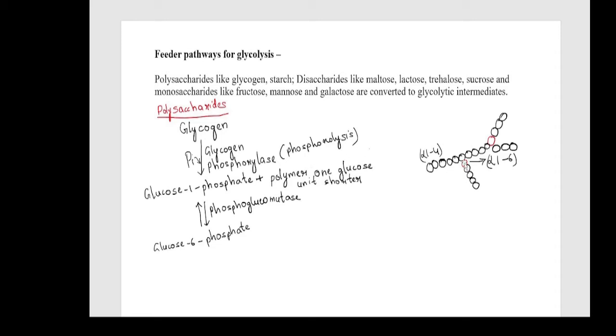At the branch point the debranching enzyme acts on alpha-1,6 glycosidic bonds. The glucose-1-phosphate formed here is converted to glucose-6-phosphate by the enzyme phosphoglucomutase. Glucose-6-phosphate is a glycolytic intermediate which can enter into glycolysis.